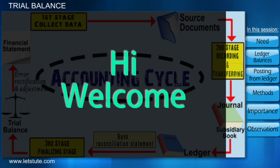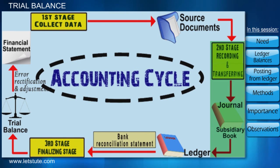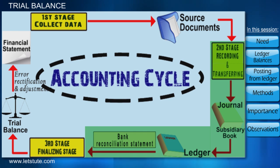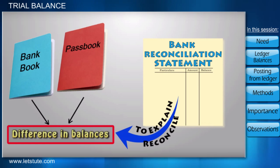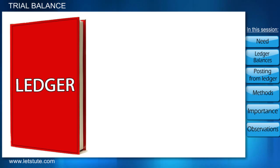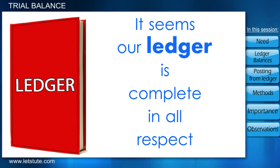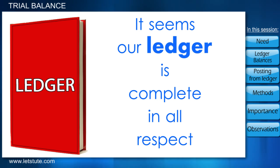Hi and welcome again. So far we have completed the second stage — the recording and transferring stage of our accounting cycle. In our previous session we compared and reconciled our bank book with the pass book. Now our ledger is complete in all respects, and we are ready to move on to the third and final stage of the accounting cycle.